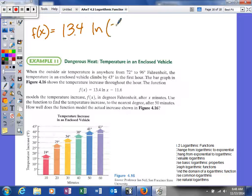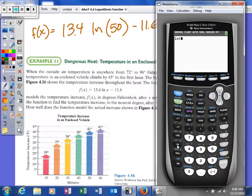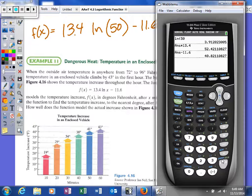So this time we're plugging in 50 for x and we're going to subtract 11.6. So again becomes a calculator problem. So we'll say the natural log of 50 and I'm going to multiply that by 13.4 and then we'll subtract 11.6. So we get basically 41.